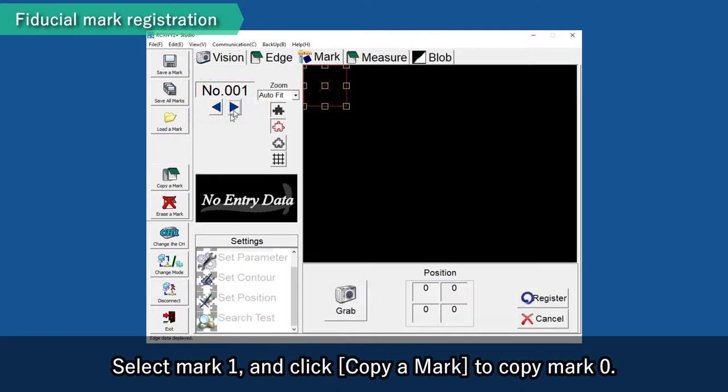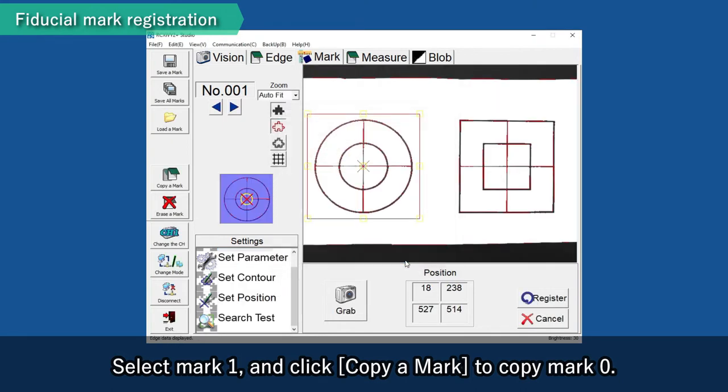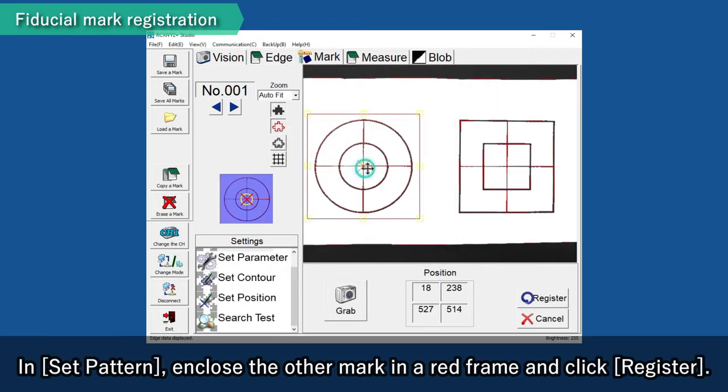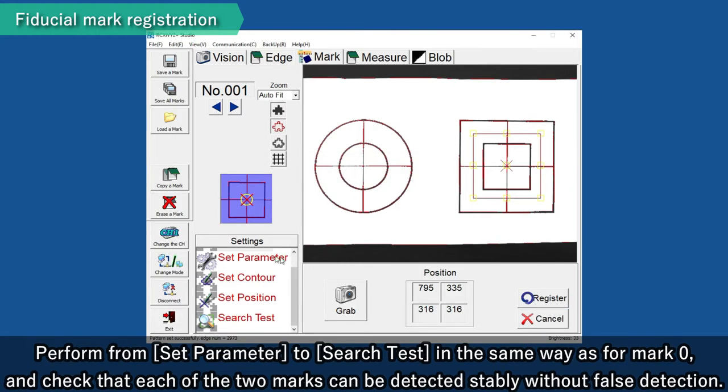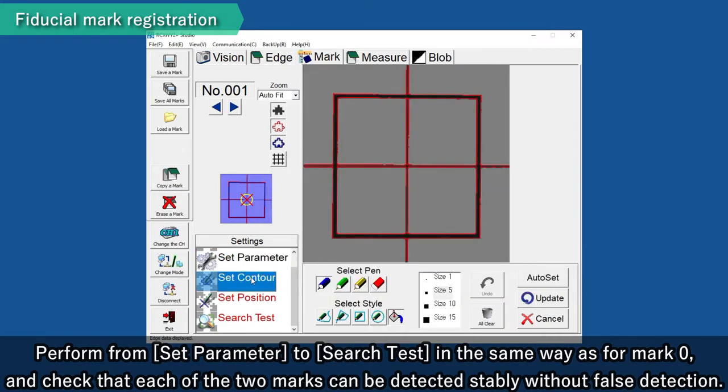Select Mark 1 and click Copy a mark to copy Mark 0. In Set Pattern, enclose the other mark in a red frame and click Register. Perform from Set Parameter to Search Test in the same way as for Mark 0. And check that each of the two marks can be detected stably without false detection.